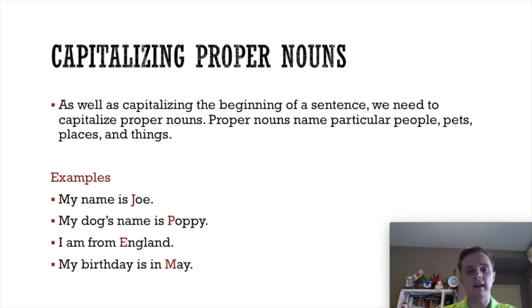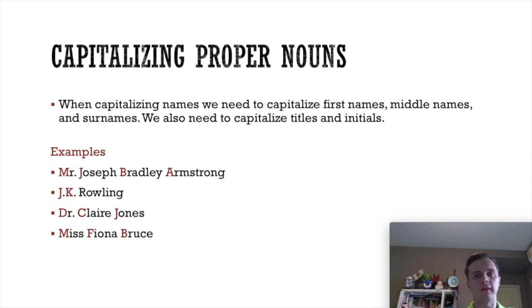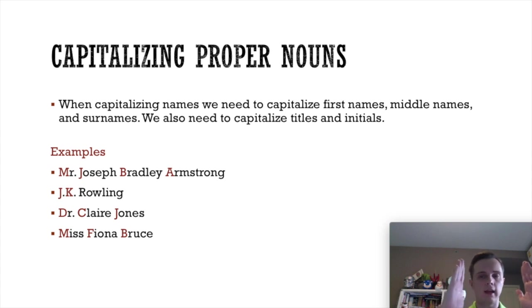My birthday is in May — that is the name of a month, and we capitalize the names of months, days of the week, and many other things. When you capitalize a person's name, you need to capitalize all of the names — first name, middle name, and surname. You also need to capitalize any titles being used, and initials. An initial is when instead of writing someone's full name, you just use the first letter of that name.